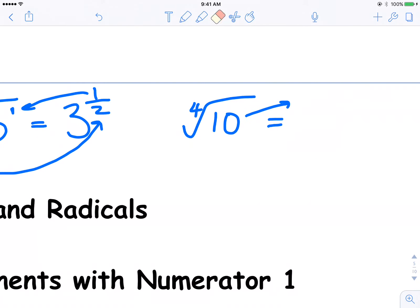I'm going to erase that a second. I need to go a little bit further over. It's a 1. What's the power, the index on the radical? It's a 4. What's my base? 10. So the 4th root of 10 can also be written as 10 to the power of 1 over 4.